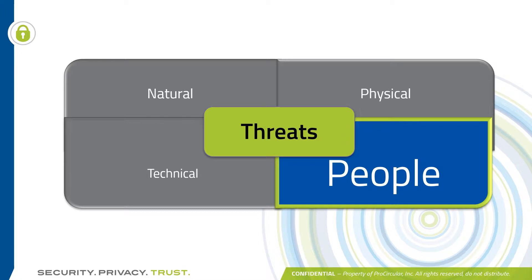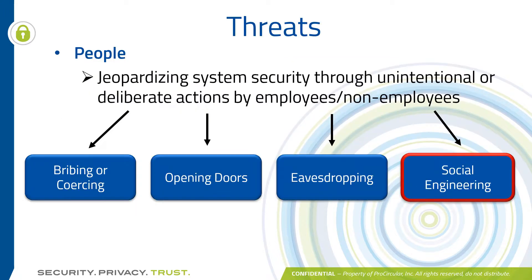Our next and largest threat are people. People can jeopardize the system through unintentional or deliberate actions by employees and non-employees. You've got bribing and coercing, opening doors — such as if a building requires a security card to get in, somebody might stand outside with a heavy box, wait for an employee and say they can't get their key card out and ask to be let in. Eavesdropping is people overhearing sensitive conversations or looking over your shoulder at your screens.